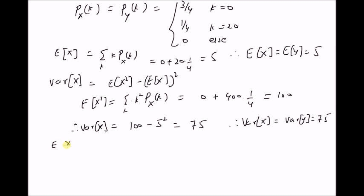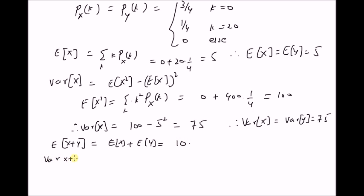Next, the expectation of the sum of these two random variables, that is X plus Y. Since X and Y are independent random variables, the expectation of the sum should be equal to the sum of their expectations. That is, E of X plus Y is equal to E of X plus E of Y, which is equal to 10. Similarly, variance of X plus Y is equal to the sum of their variances, that is variance of X plus variance of Y, which is equal to 75 plus 75, that is 150.